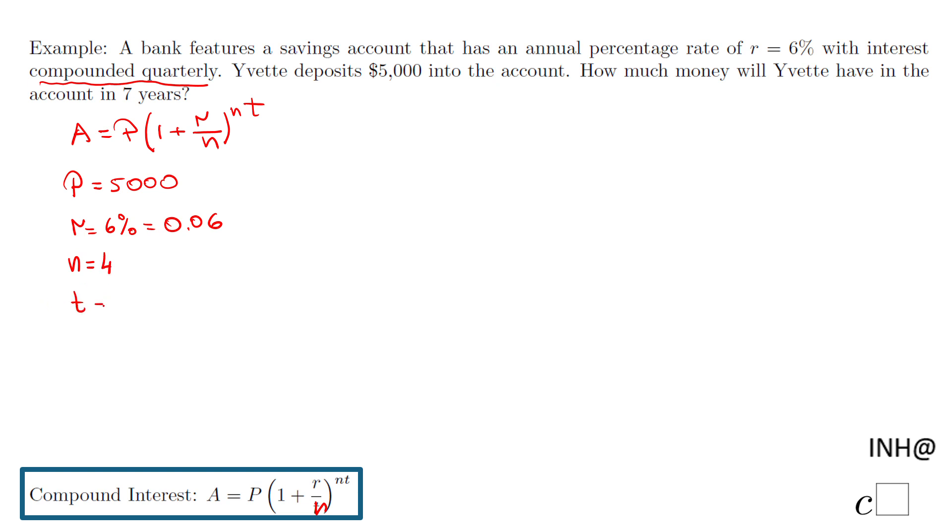Compounded quarterly, that means n is 4, and t is 7. So these are the numbers I'm going to plug in.